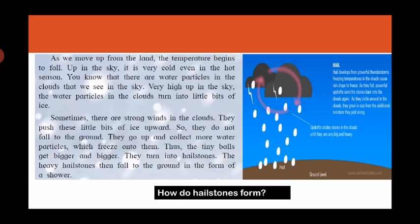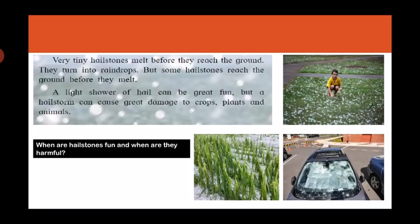Isn't that interesting, children? This is how we learn to inquire — we learn to find out why things are happening around us. Very tiny hailstones melt before they reach the ground and turn into raindrops. But some hailstones reach the ground before they melt. A light shower of hail can be great fun, but a hailstorm can cause great damage to crops, plants, and animals.